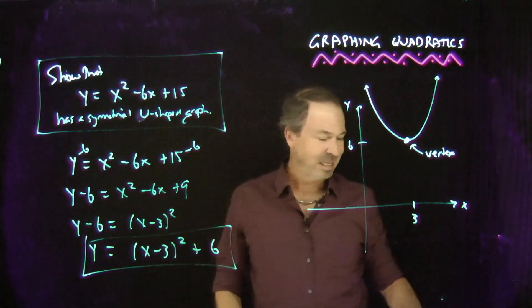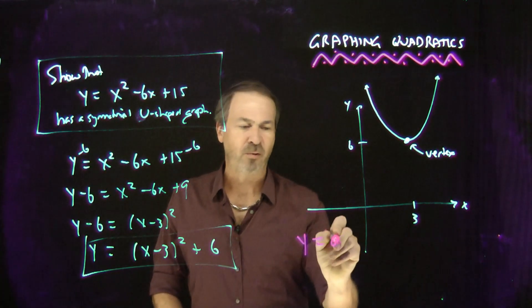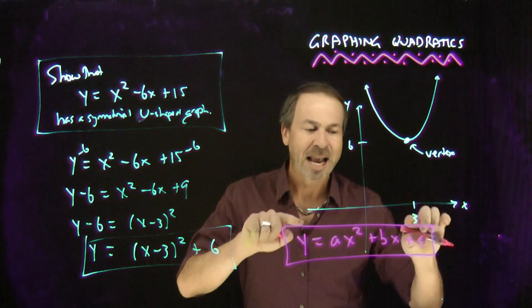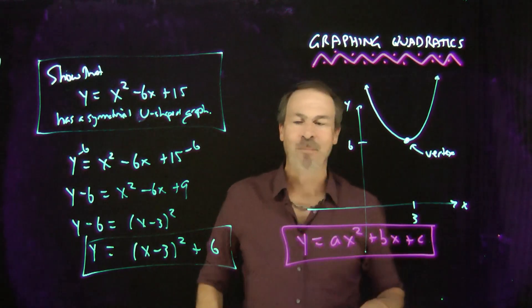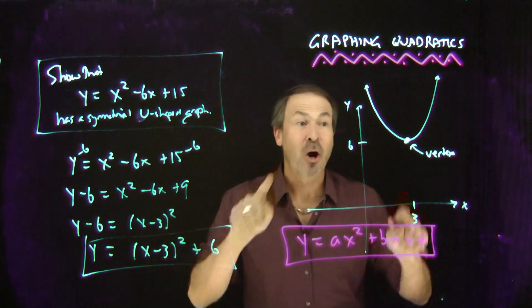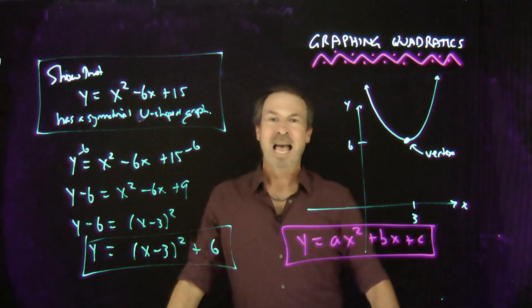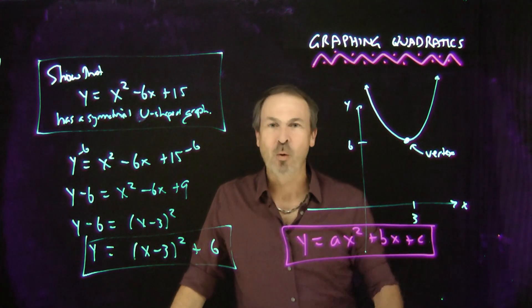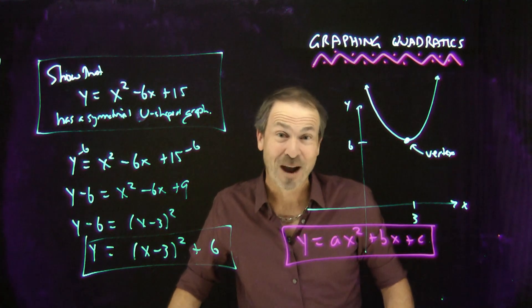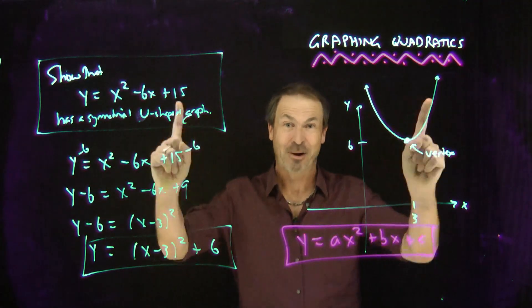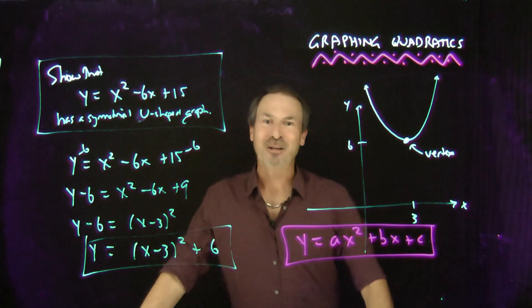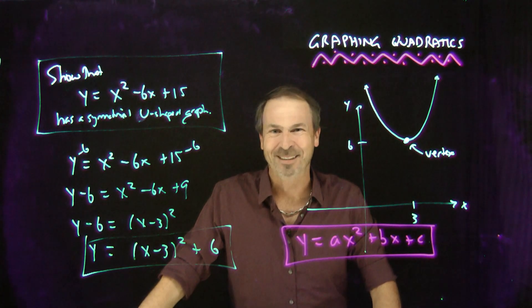You can actually do the same trick to prove that any equation — whatever the numbers a, b, and c are — really is going to be something squared plus or minus something. There might be some steepness, but it's going to be another one of these U-shaped graphs. So we've now discovered something amazing: every quadratic equation has a symmetrical U-shaped graph. In the next video, now that we know things are symmetrical, let's use that symmetry to our advantage — it's powerful and it's our friend.